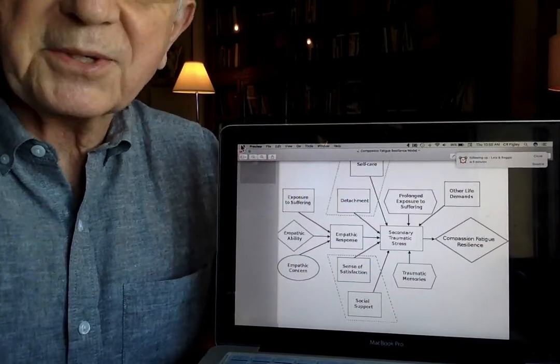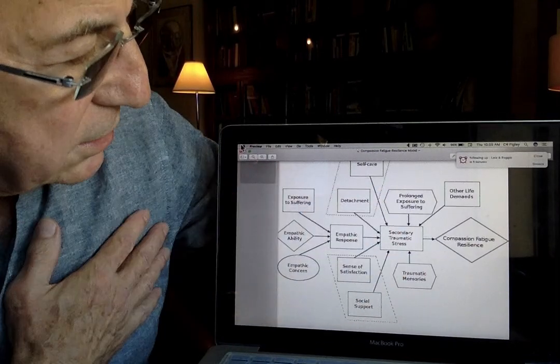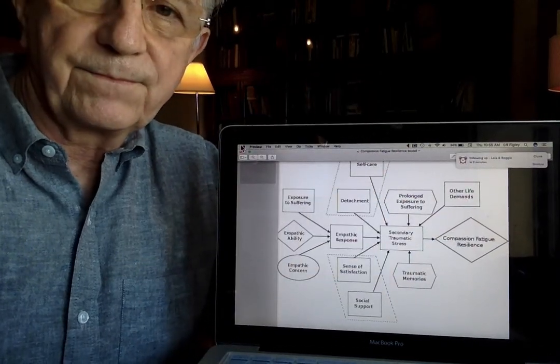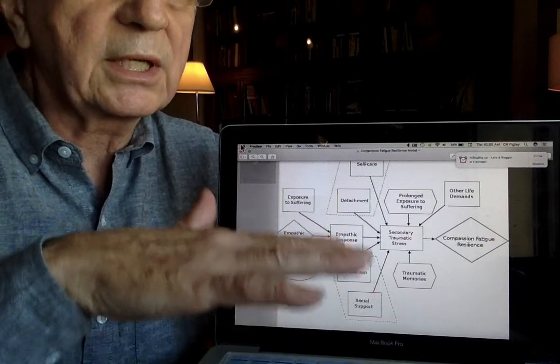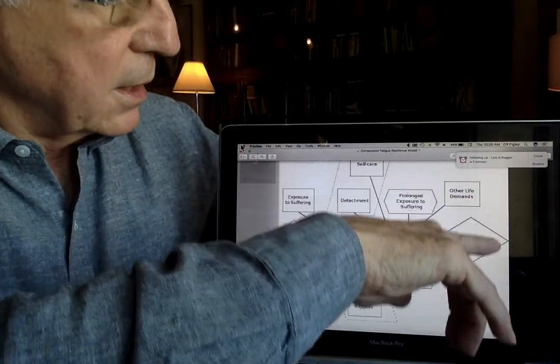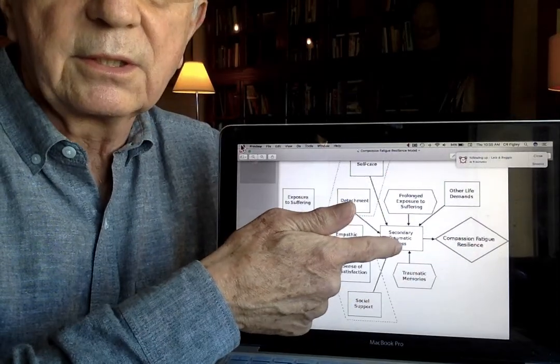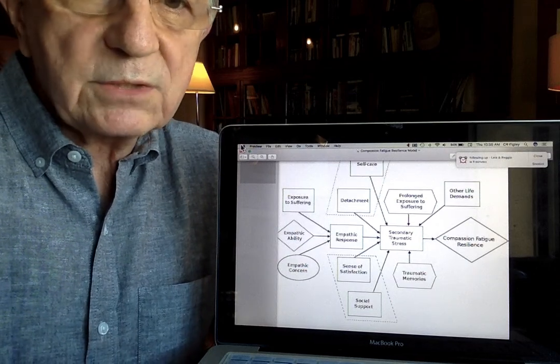So all of this then is a conduit into the secondary traumatic stress and that predicts resilience. So the lower the amount of secondary stress that you have as like your default level, the higher the resilience you're going to have in dealing with it. So there's more capacity here. So hopefully that's useful and lots and lots of places to find it.